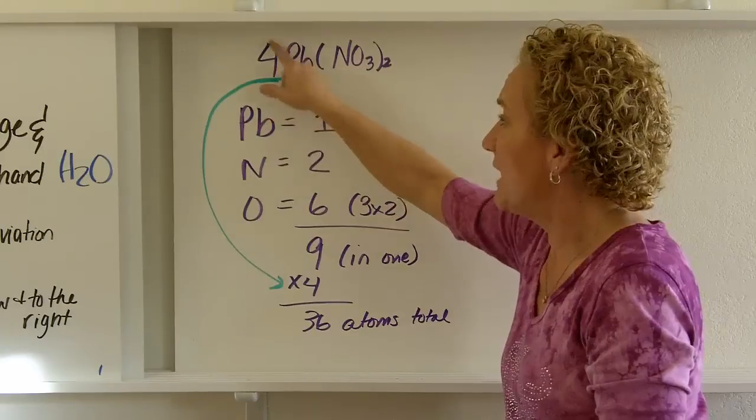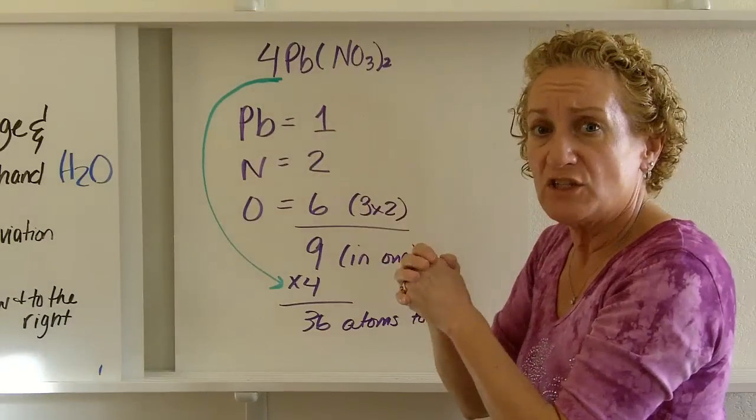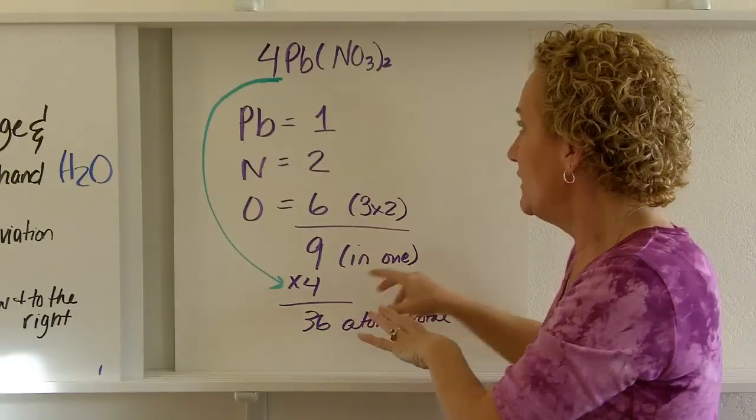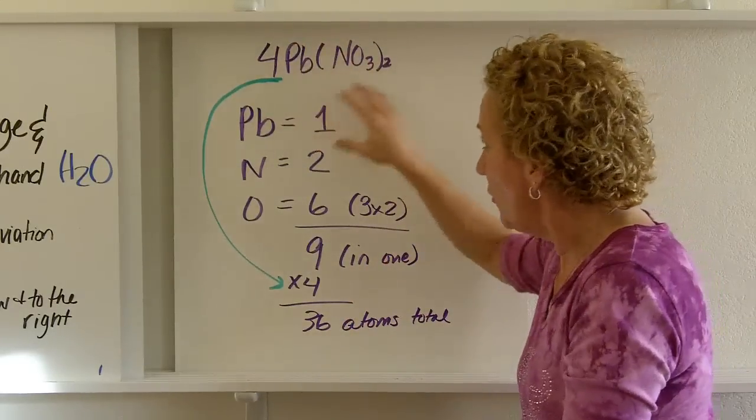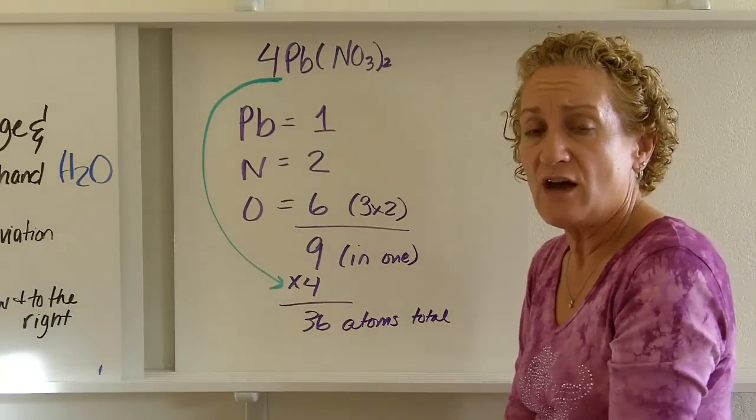But you'll see that I've been asked for 4, my coefficient is 4. Once I find out how much is in 1, then I go to my coefficient, multiply 9 times 4, and I get 36 atoms in this whole thing. So your total number of atoms is 36. That's how you count atoms.